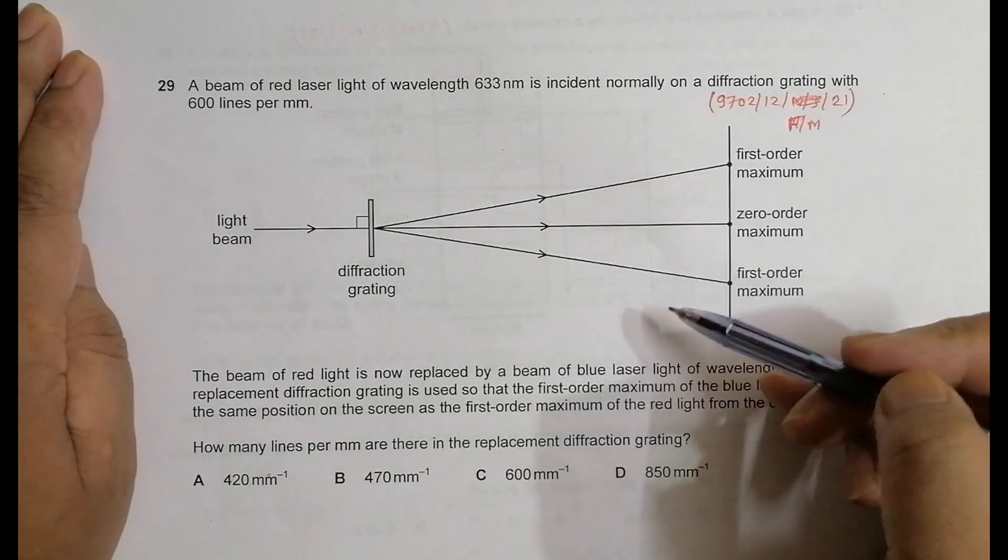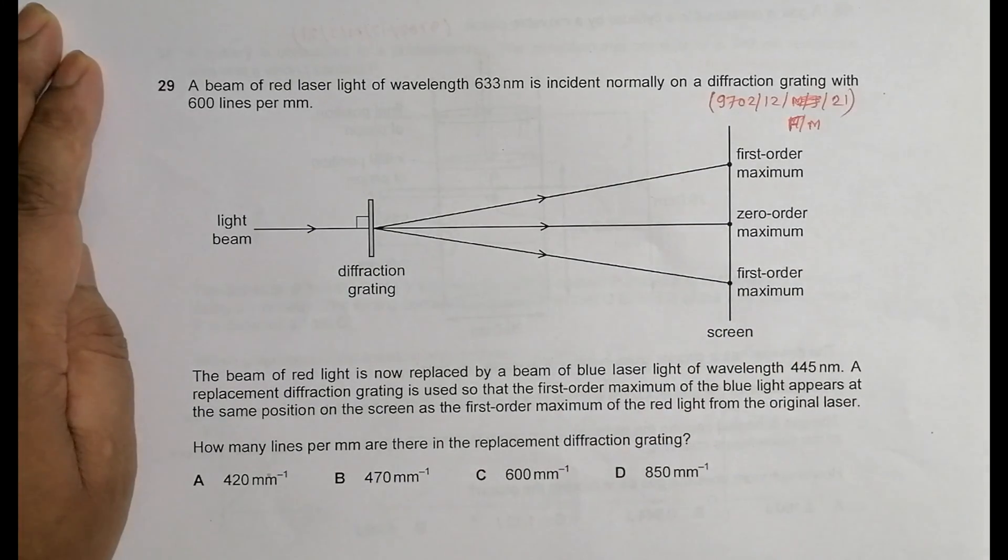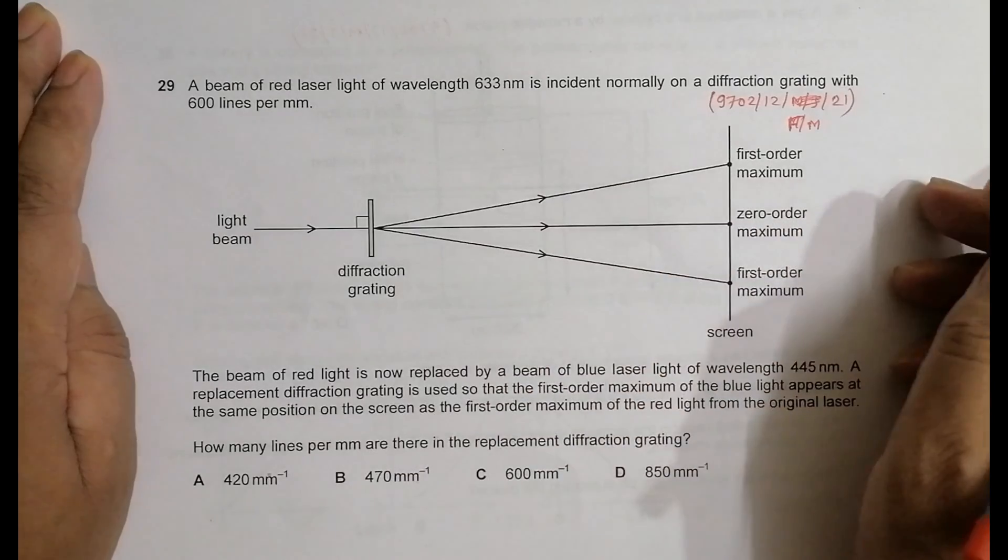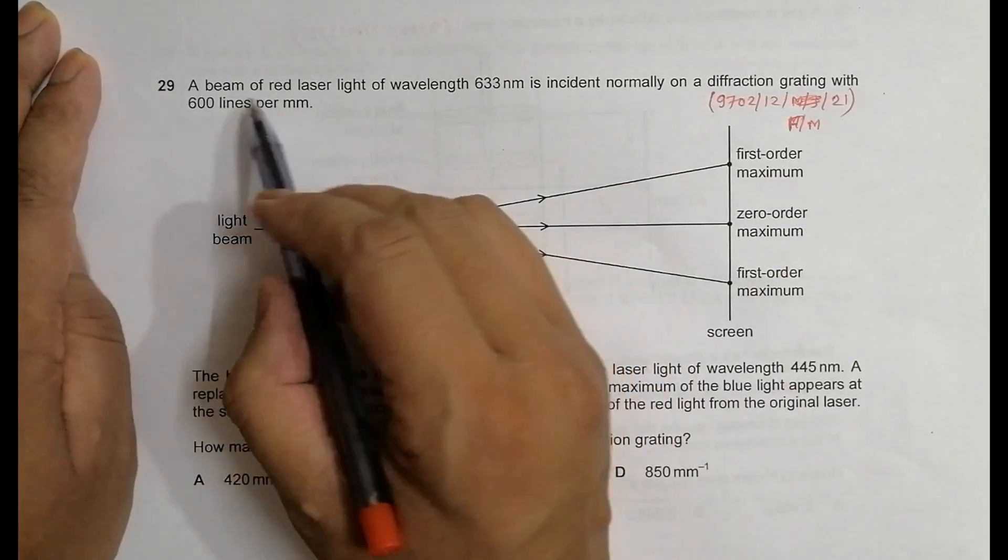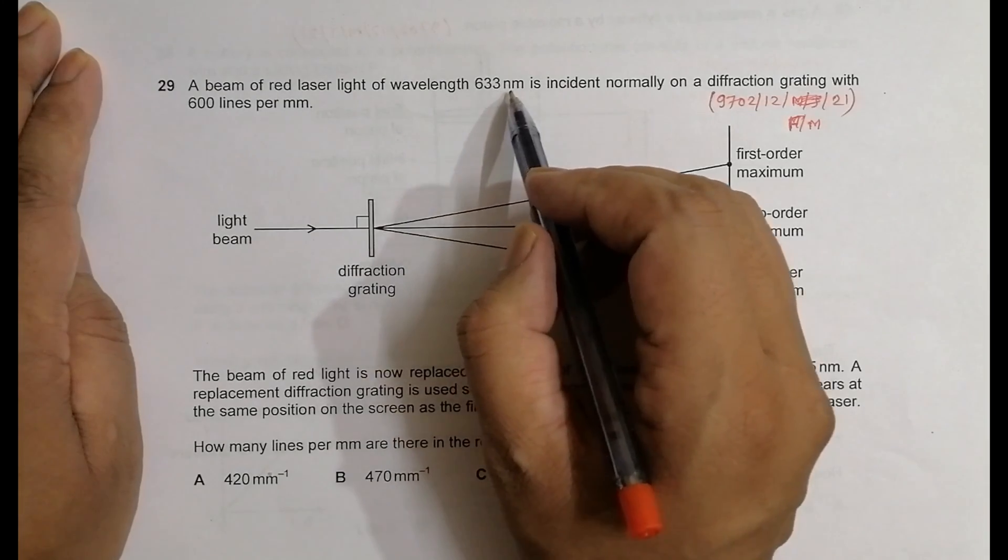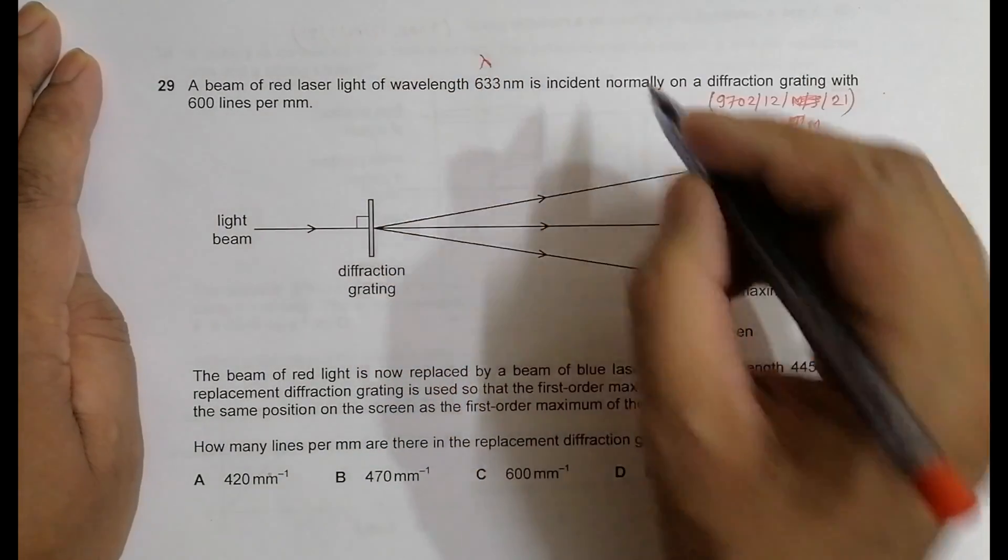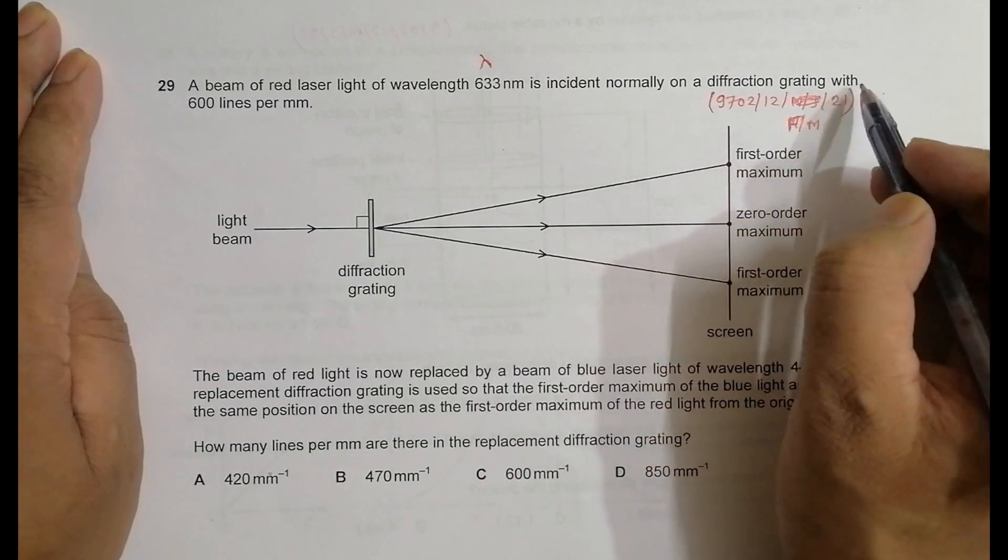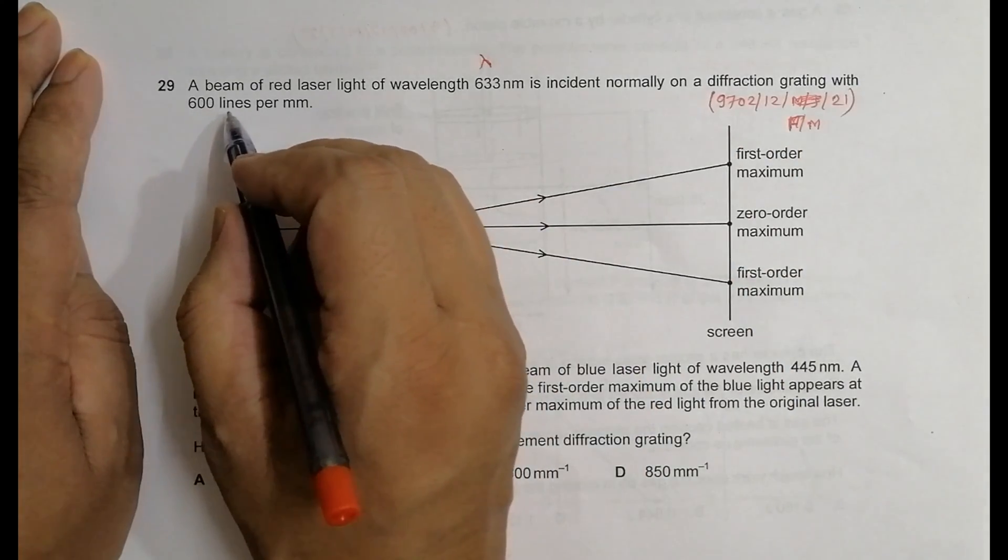This is concerned with the chapter on superposition. As you can see, diffraction grating here belongs to diffraction. A beam of red laser light of wavelength 633 nanometers, so lambda, is incident normally on a diffraction grating with 600 lines per millimeter.